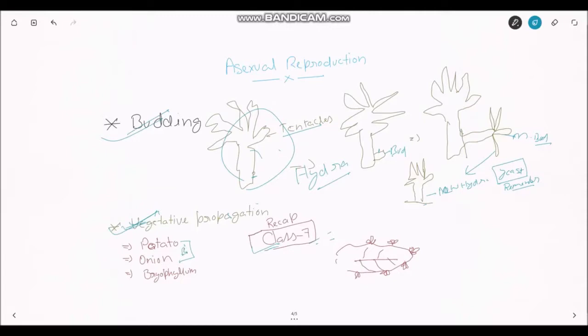You must have read all this in class 7th. You just have to recapitulate from 7th class book, but still I'm going to take a little part of it. You must have read grafting, leaf cutting, and how to connect and cut two plants.